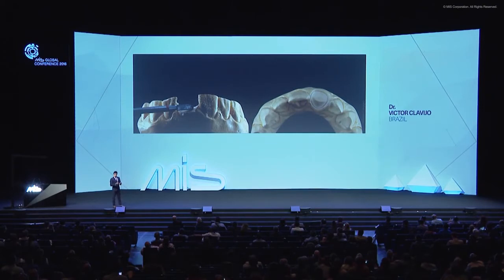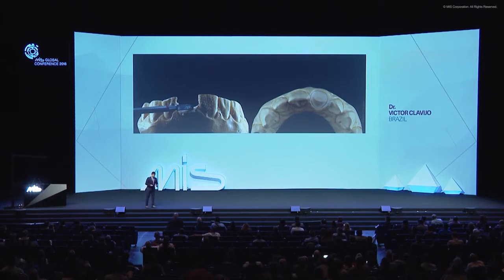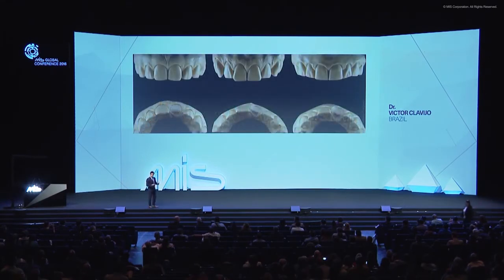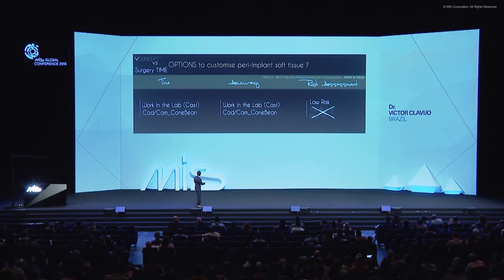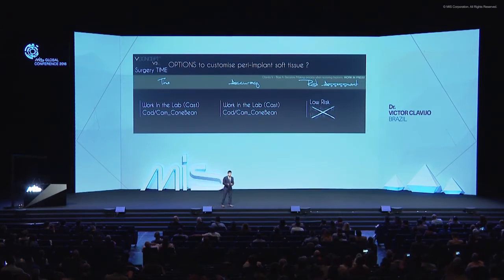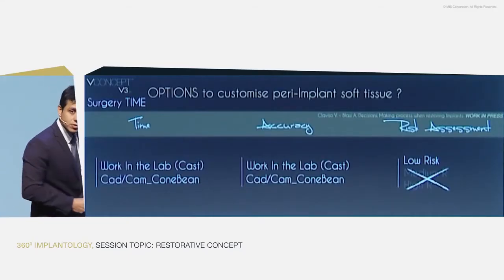For more accuracy with custom abutments, we started doing some experiments. If you go to your cast before surgery and remove the tooth on top of the cast, you find different root shapes. If you want to create a protocol, you can work in the cast to improve your time. Nowadays you can work with CAD-CAM and scan your cast for more accuracy in your restorations.